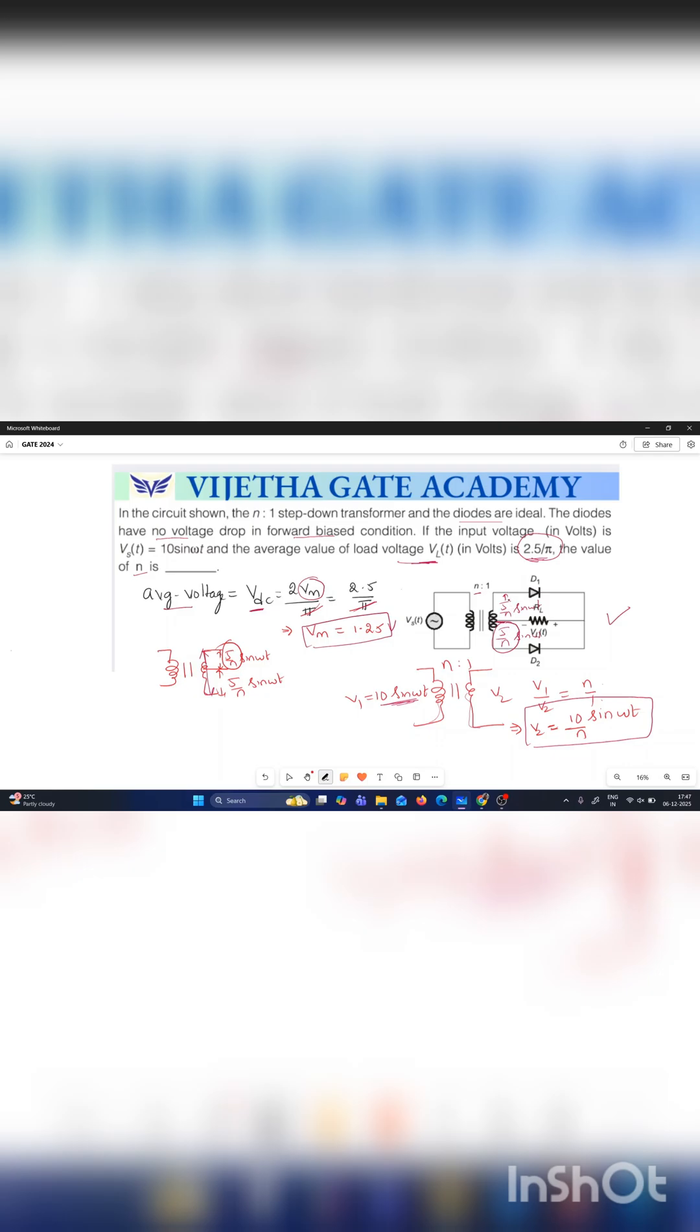So Vm is equal to the voltage across the upper half of the secondary winding. We have to substitute 5 by n equals Vm, and Vm we already got it as 1.25.